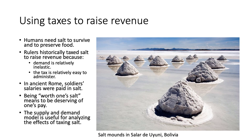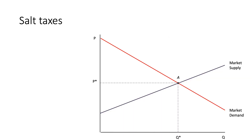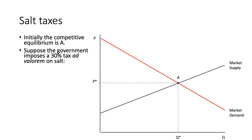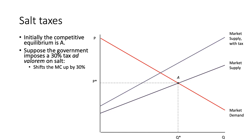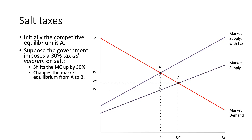The supply and demand model is very useful for analyzing the different impacts of taxing different products. In our classic supply and demand model, the initial competitive equilibrium is at point A where the supply and demand curves intersect. Suppose the government imposes a 30% ad valorem tax on salt. This shifts the marginal cost curve up by 30%. In our partial equilibrium models the marginal cost curve and supply curve are synonymous. We can see the shift, and the equilibrium moves from point A to point B.